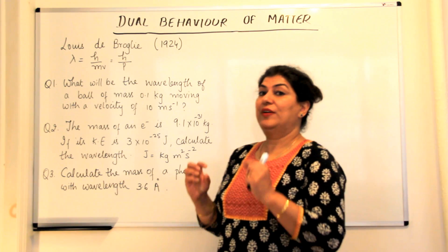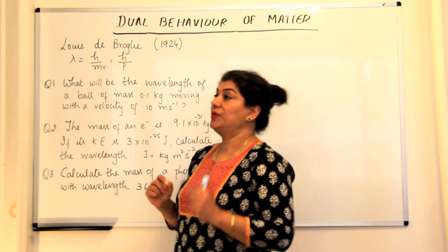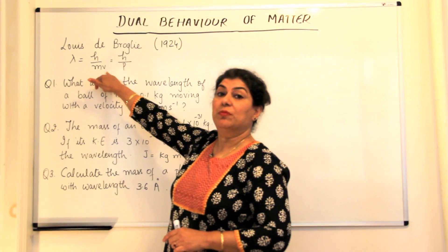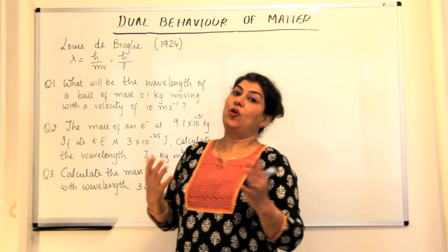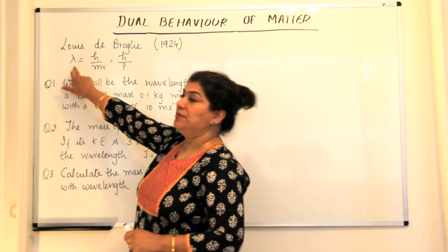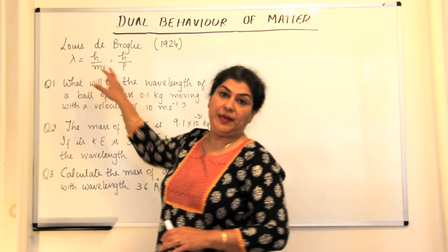And just as there is a relationship between the momentum of the electromagnetic radiation and the wavelength, in the same way there is a relationship between the momentum and the wavelength of matter too, and it is given by the formula lambda is equal to H over mv.